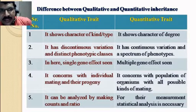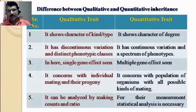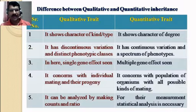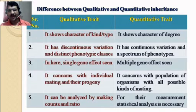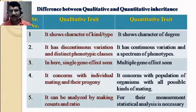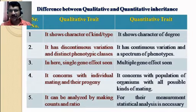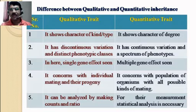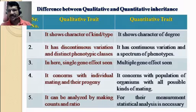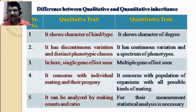Now we will see the differences between qualitative and quantitative traits. First, qualitative traits show characters of kind and type — for example, red color flowers or white color flowers, which are characters of kind or type. In contrast, quantitative traits show characters of degree. They do not show alternating characters like qualitative traits; instead, the number of genes present determines what type of phenotype is expressed, which is the character of degree.